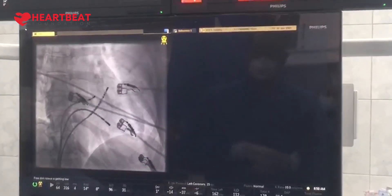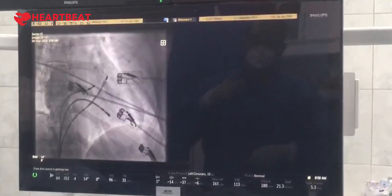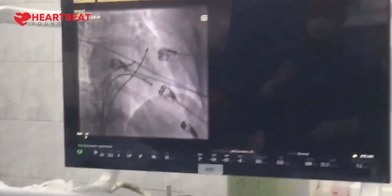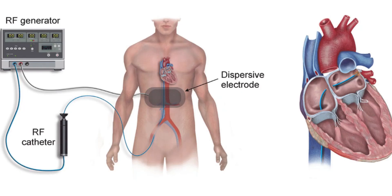We then locate the electrical circuit responsible for the arrhythmia. This entire procedure is called an electrophysiology study. Once we locate that circuit, we deliver laser energy — which we call RF ablation. This study is mostly not a daycare procedure; the patient usually needs to stay for one day.